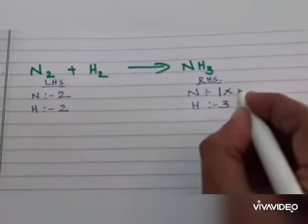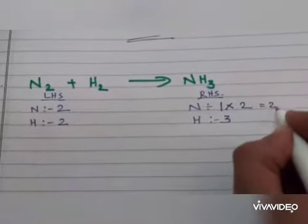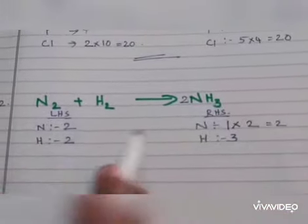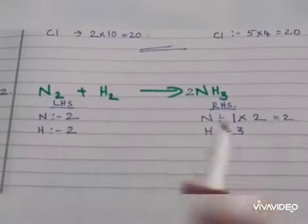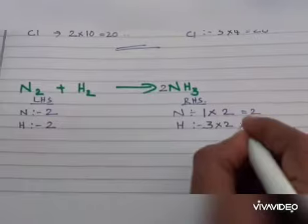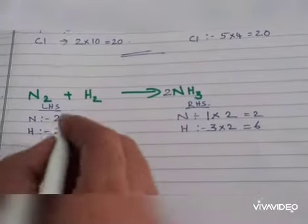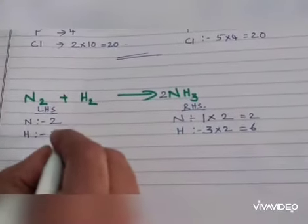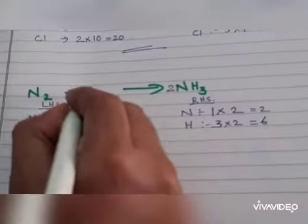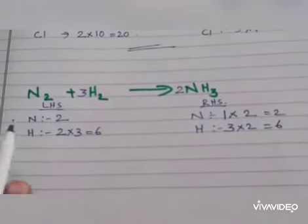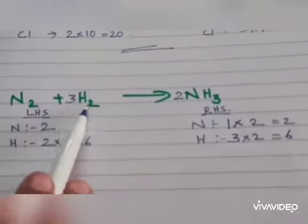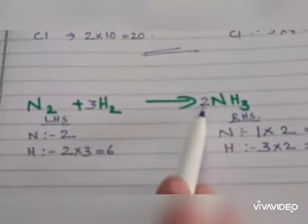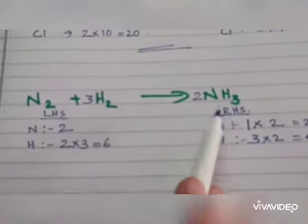So 2 NH3. We add 2 as a coefficient. We can only change the coefficient. And here in RHS, 6 hydrogen atoms, and in LHS which is only 2 hydrogen atoms. So multiplying by 3, we get 6 hydrogen atoms. 2 nitrogen, 2 nitrogen, 6 hydrogen, here also 2 into 3, 6 hydrogen. So this is a balanced equation.